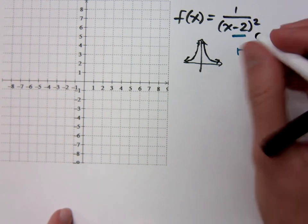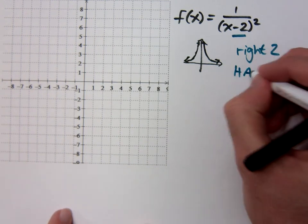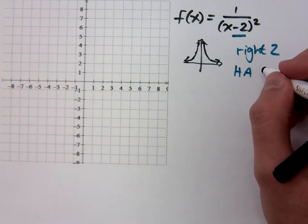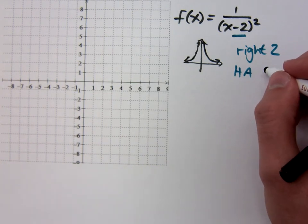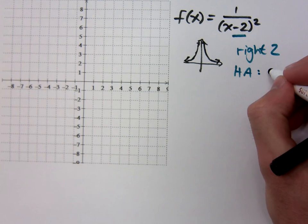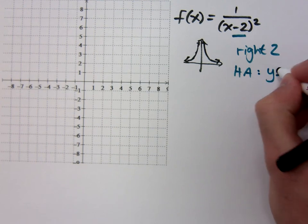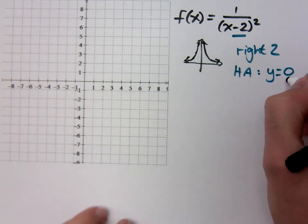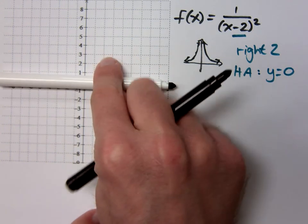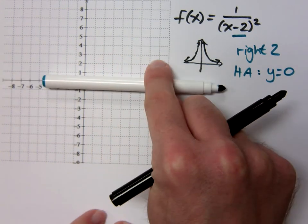I want you to tell me something before I graph this. What is your horizontal asymptote? What was it before? No. y equals 0 is what it was before. If I go to the right 2, what is it? y to the right 2 is what I have to do. It's still y equals 0. If it was this guy right here, and I go to the right 2, it's still that guy.